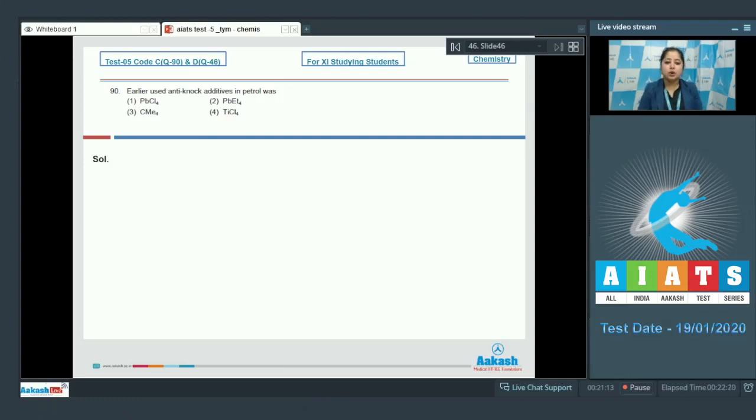The earlier used anti-knock additive in petrol is TEL, that is tetra ethyl lead, which is PbEt4. So the correct answer is option number 2.